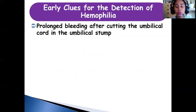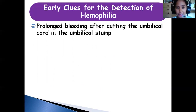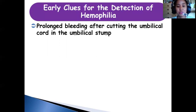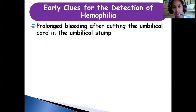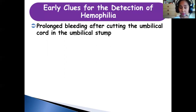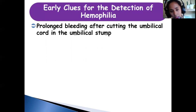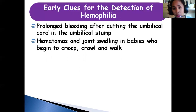Early clues for detecting hemophilia include family history and observation of the baby. If there is bleeding after cutting of the umbilical cord, or bleeding in the umbilical stump — the residual area after the cord is cut — that can be a sign of hemophilia. Bruising and bleeding in the umbilical stump should be observed closely.